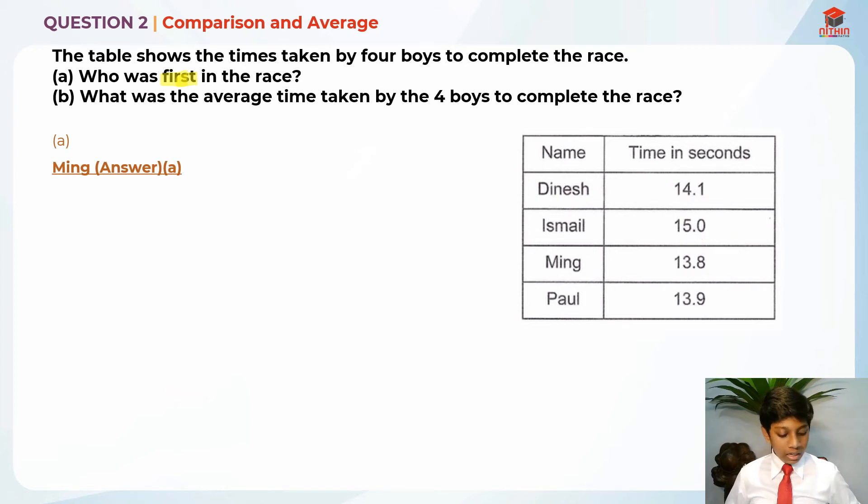After that, they are telling us that for part B, what was the average time taken by the 4 boys to complete the race? There's a keyword here: average time by the 4 boys. What is average? Do you remember like I said before? Let me write it down over here.